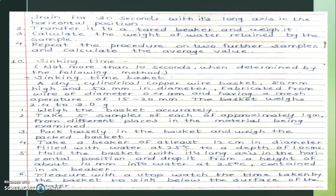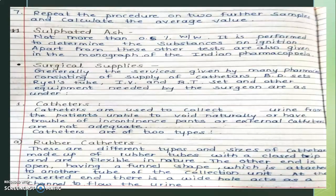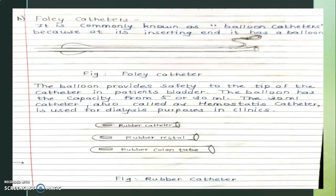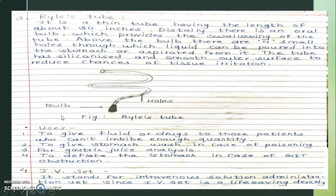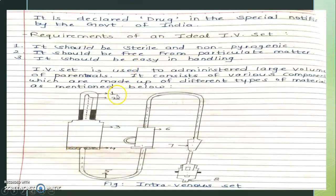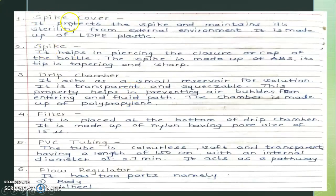Next we will get information about the catheters and surgical supplies. We have rubber catheters, rubber rectal catheters, BD sets, and IV drip sets. The components of the IV set include: number one is the spike, number two is the spike cover, and number three is the drip chamber filter.